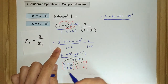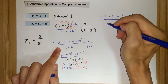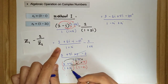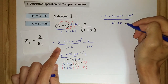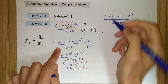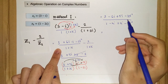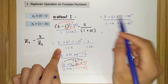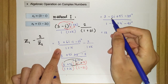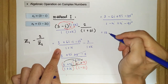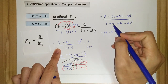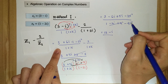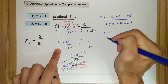For the denominator: 1 times 1 is 1, 1 times negative 2i is negative 2i, positive 2i, and 2i times negative 2i gives negative 4i squared. Simplifying — since i squared is negative 1 — negative 10i squared becomes positive 10, so 3 plus 10 equals 13. Then negative 6i plus 5i is negative i. In the denominator, negative 2i plus 2i is 0, and negative 4 times negative 1 is plus 4, so 1 plus 4 equals 5. The result is 13 minus i over 5.